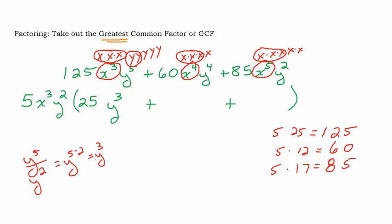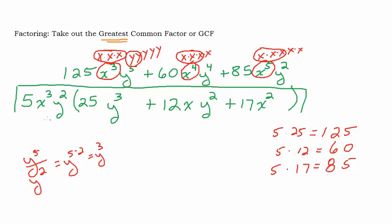So let's write what we have left inside the parentheses. 125 divided by 5 is 25; x cubed divided by x cubed leaves nothing; y to the 5th divided by y squared leaves y cubed — giving 25y cubed. Then 60 divided by 5 is 12; x to the 4th divided by x cubed leaves x; y to the 4th divided by y squared leaves y squared — giving 12xy squared. Then 85 divided by 5 is 17; x to the 5th divided by x cubed leaves x squared; y squared divided by y squared leaves nothing — giving 17x squared. So the final answer is 5x cubed y squared times (25y cubed + 12xy squared + 17x squared).